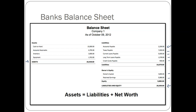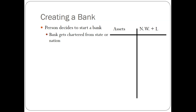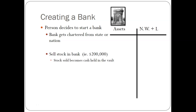The numbers we're using are from the 17th edition McConnell-Brue textbook. First, a person decides to start a bank — they get a charter, either state or national. Now they have the license but no money. Someone believes in them and gives them $200,000, and in exchange they sell that person some stock — so that's net worth. They now have $200,000 of cash on the asset side, equal to $200,000 of net worth.